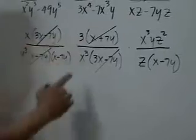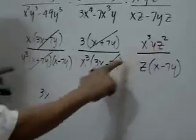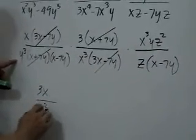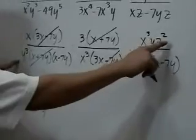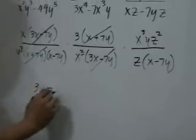x and 3 will be left. This y by this y cube is y squared in the denominator. We have z squared by this z, which will give us z in the numerator.